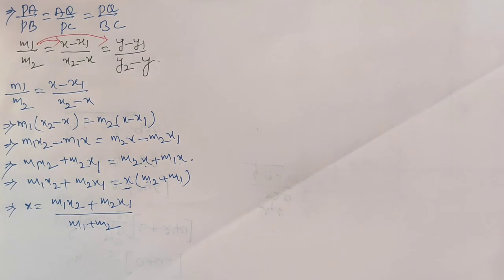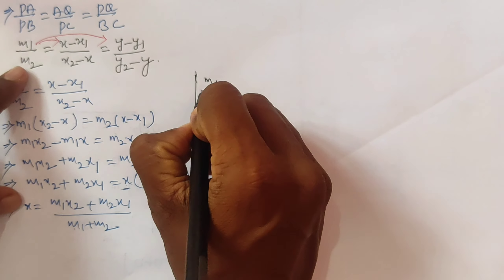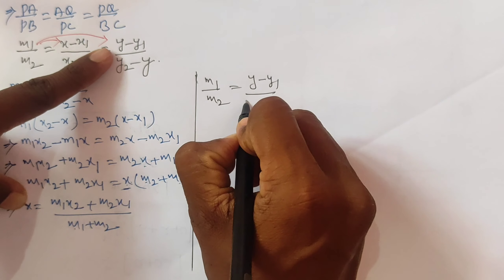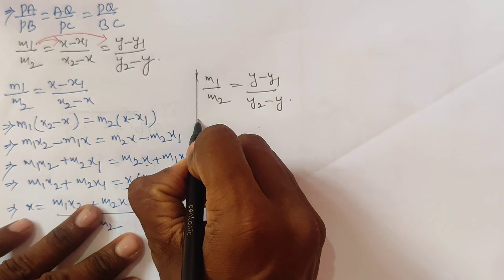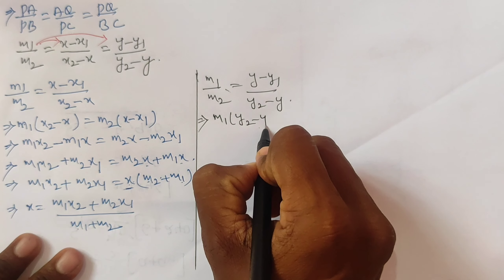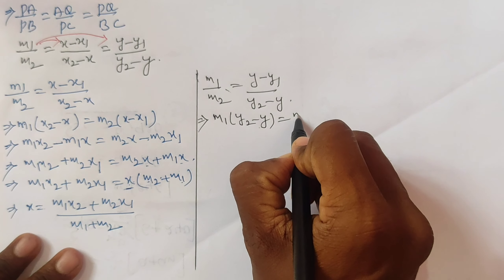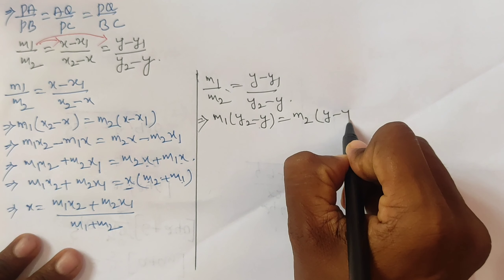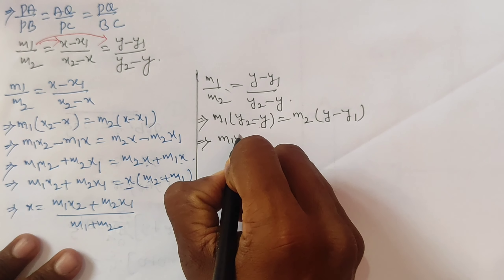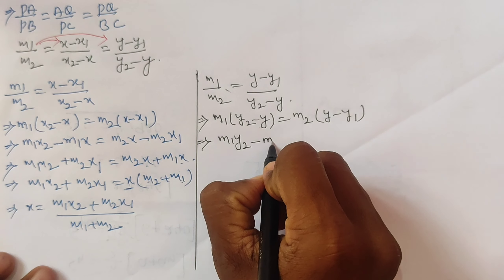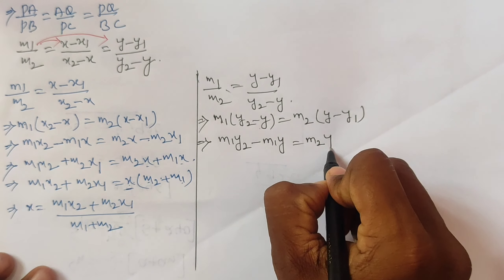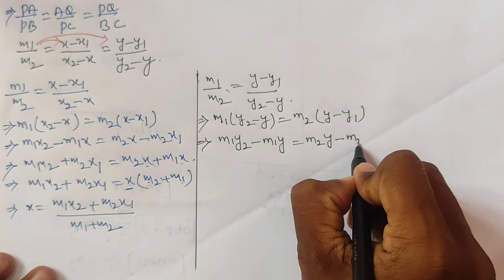Now we equate for y. m1 by m2 equals (y minus y1) by (y2 minus y). By cross multiplication: m1 into (y2 minus y) equals m2 into (y minus y1), giving m1·y2 minus m1·y equals m2·y minus m2·y1.